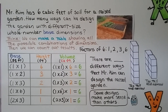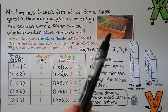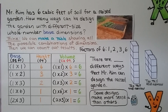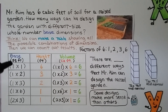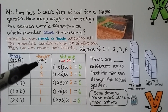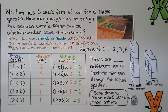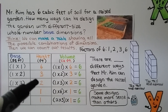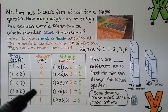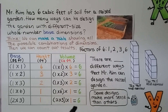Mr. Kim has 6 cubic feet of soil for a raised garden. How many ways can he design the garden with different size whole number base dimensions? We make a table showing all possible combinations. The factors for 6 are: 1×6 and 2×3. So we can have a base of 1×1 with height 6, a base of 1×2 with height 3, a base of 1×3 with height 2, a base of 1×6 with height 1, or a base of 2×3 with height 1. They all give a volume of 6 cubic feet.